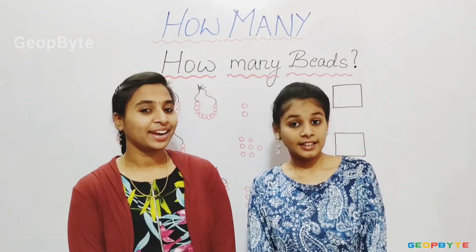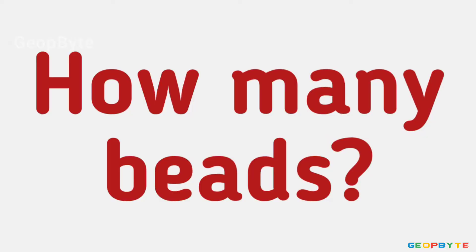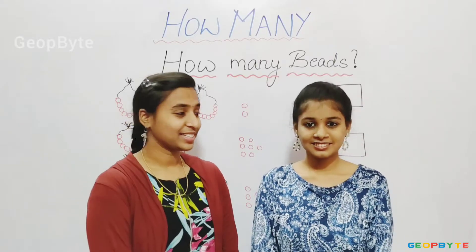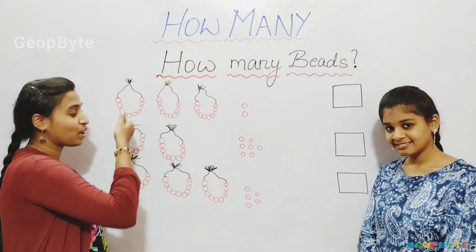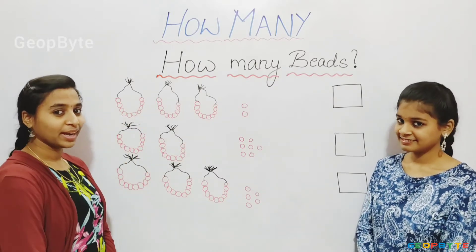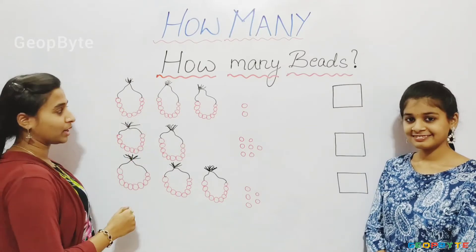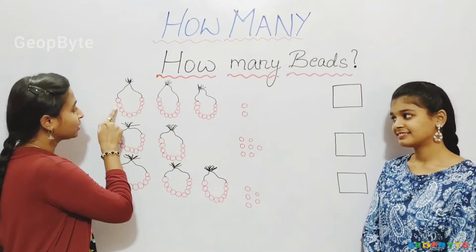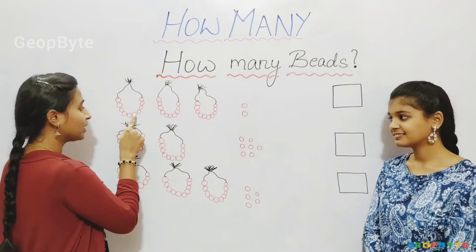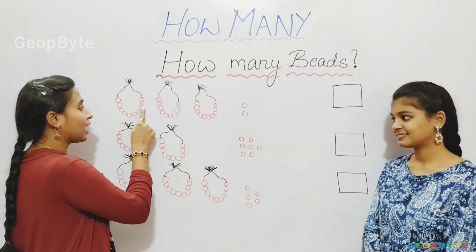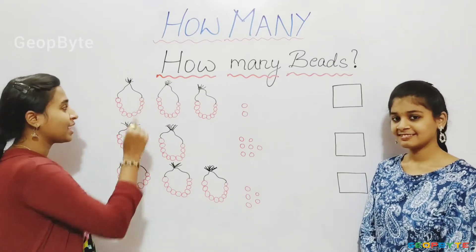Now let us get into the topic — how many beads? Hey kids, see here. We have beads which are in the form of strings. Now let us count them one by one. One, two, three, four, five, six, seven, eight, nine, ten. There are ten beads in this string.